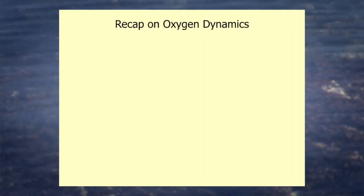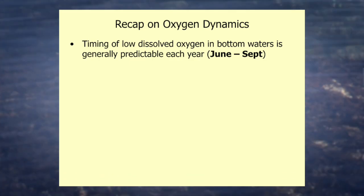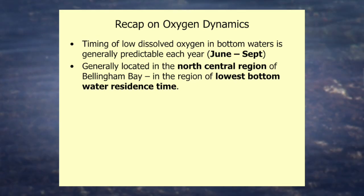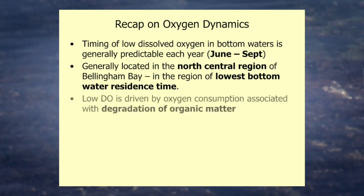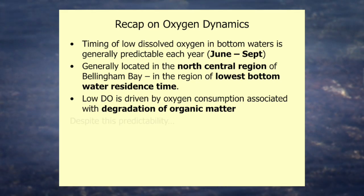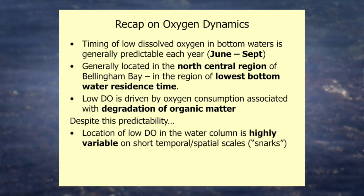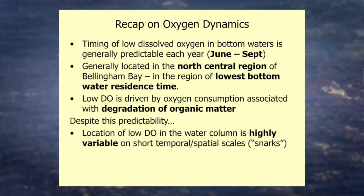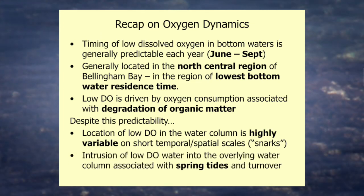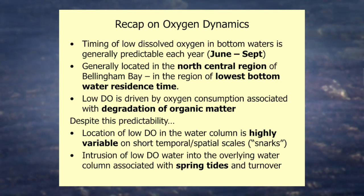To recap: low DO is predictable every summer, decreasing from June to September, and tends to occur in the same place in Bellingham Bay. Despite the predictability of these low DO concentrations in the bottom water, it's highly variable with this movement up and down in the water column, and it appears to be related to some kind of turnover happening with low DO water.